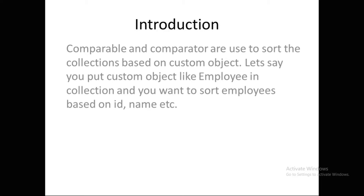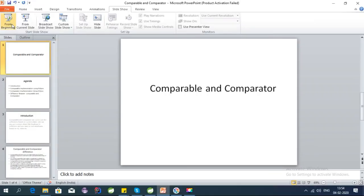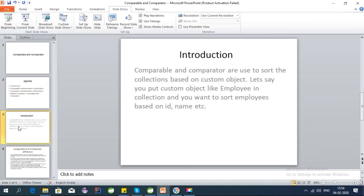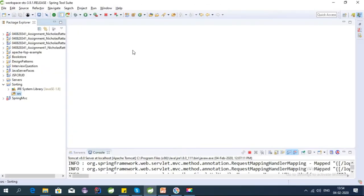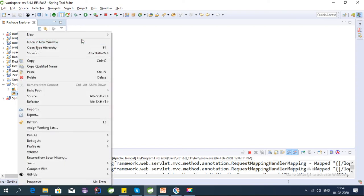Comparator and Comparable are used to sort a collection based on custom objects. So let's say you put some custom objects like Employee in a collection and you want to sort employees based on ID or name — you can use Comparator for that purpose.